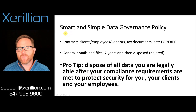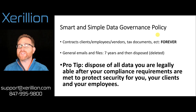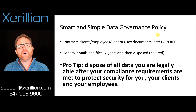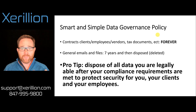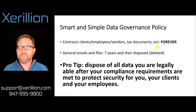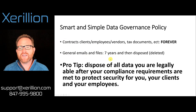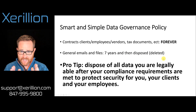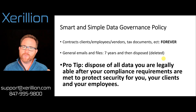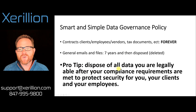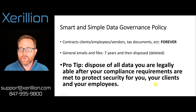A smart and simple data governance plan works like this: contracts, clients, employees, vendors, and tax documents get a forever retention policy — those are company records. But general emails and files get a seven-year and then disposed retention policy, meaning they have a lifespan of seven years and then are removed from the system. Pro tip: dispose of all data you are legally able to after your compliance requirements are met, to protect the security of you, your clients, and your employees.